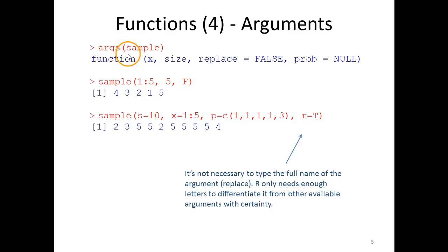Here we ask for the arguments of sample, the function sample, and we get this in return: function, and then within parentheses the arguments x, which would be an object containing the values that you are to sample from, size the sample size, replace which also has a default value as you can see here.